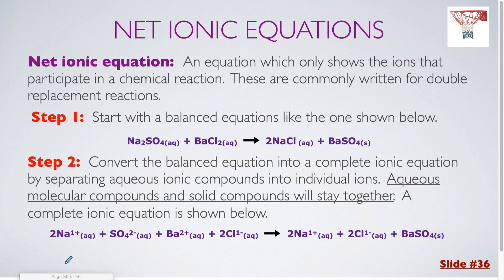Next we have net ionic equations. A net ionic equation is something that we do for a double replacement reaction which occurs. The net ionic equation only shows the ions that participate in a chemical reaction. We're going to start off with a balanced equation: Na2SO4, BaCl2, 2NaCl, BaSO4. Once you have a balanced equation, you break apart anything that was aqueous into the individual ions. Here I had two sodiums, and sodium is always plus one, so two Na⁺. There was a single sulfate and sulfate is always minus two, so SO4²⁻. The barium chloride is also aqueous — barium is always plus two, so Ba²⁺. There are two chlorines, and chlorine is always minus one, so two Cl⁻.